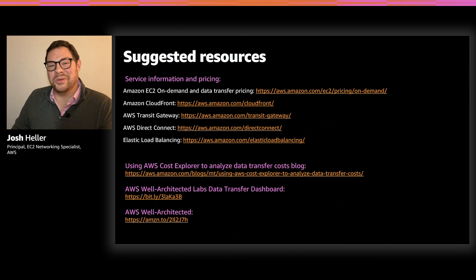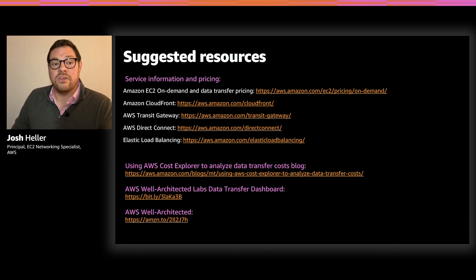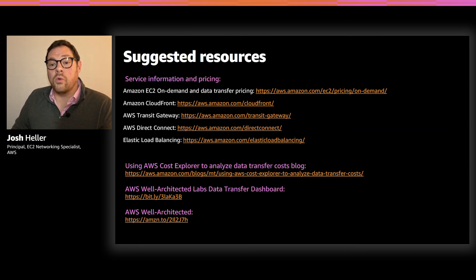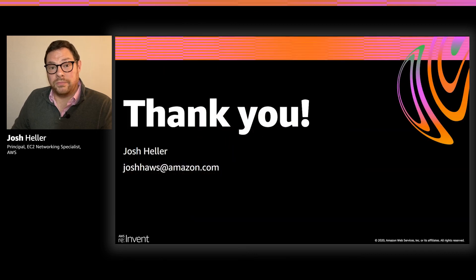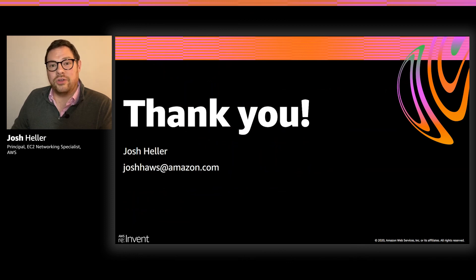Over the last 30 minutes, we got the opportunity to dive into the details about how the AWS global network is built, what data transfer is and where it happens on the network, as well as some different tools and techniques that are available to help you see the impact data transfer has on your use of AWS. Finally, we talked about techniques you can use to minimize the impact of data transfer costs. Before we close, I've compiled a list of the links I've mentioned throughout this presentation — you may find these useful to learn more about how to manage data transfer in your environment. Thank you so much for your time today. I'm Josh Heller — my email address is on the slide, and I'd genuinely love to hear your feedback and questions.